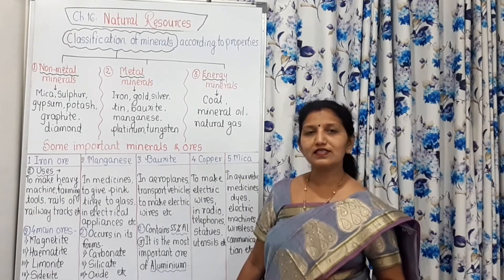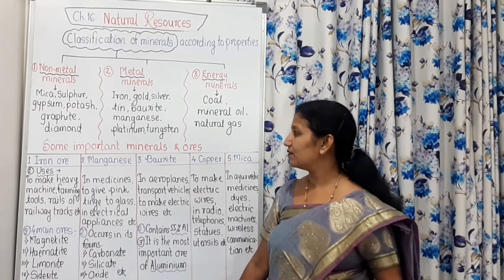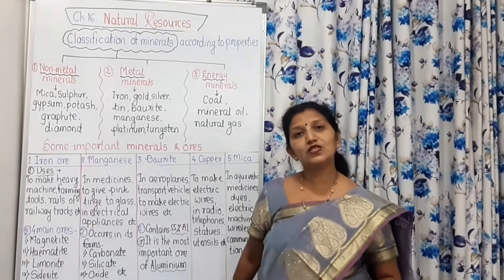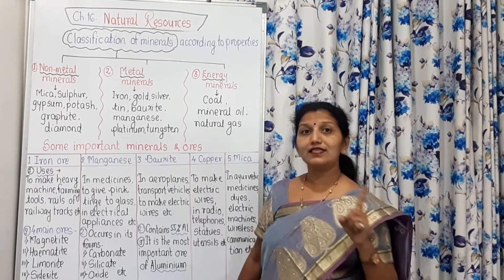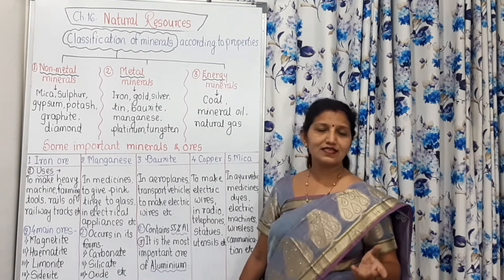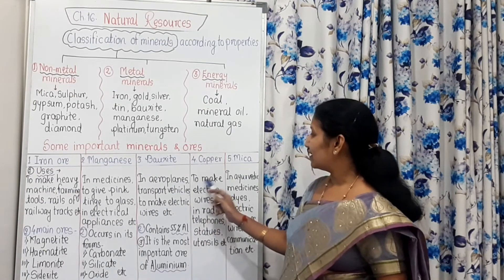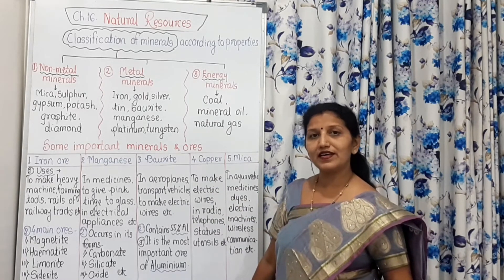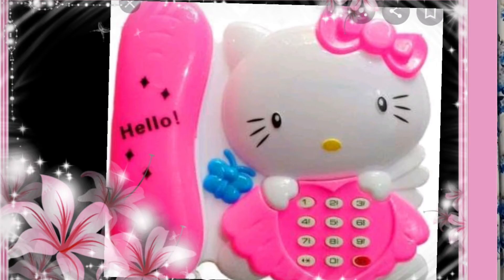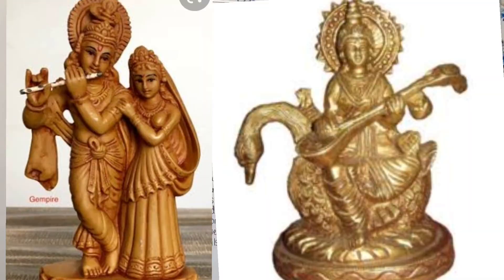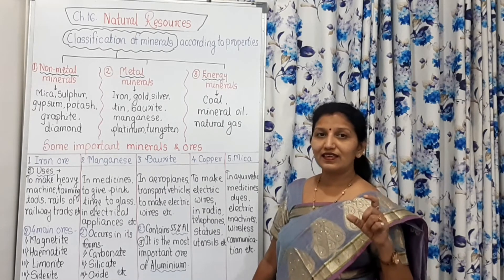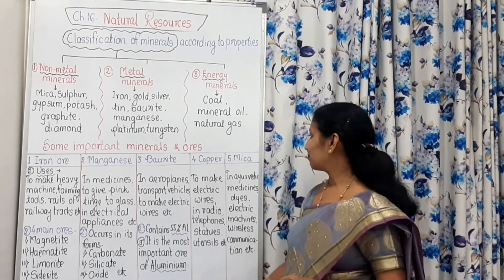Copper also occurs in impure form in the vicinity of iron and aluminium. It is a very good conductor of heat and electricity, and it is ductile, malleable, and has lustre. It is used to make electric wires, and is also used in radio and telephones, as well as for making statues, eyeballs, and kitchen utensils.